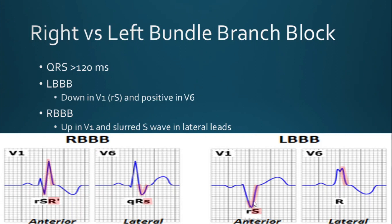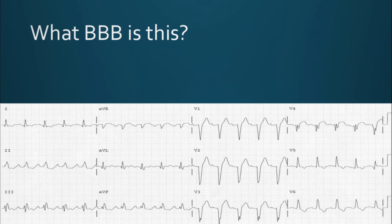I have another video called 'STEMI Equivalent Left Bundle Branch Block — the Smith-Sgarbossa criteria' that goes more into left bundle branch blocks. I'll link that in the upper right corner. Now let's do a quick test question — you either get a zero or 100%. What bundle branch block is this? Pause the video and look at the example. You see a widened QRS and the QRS is down in V1 — so this is going to be your left bundle branch block.